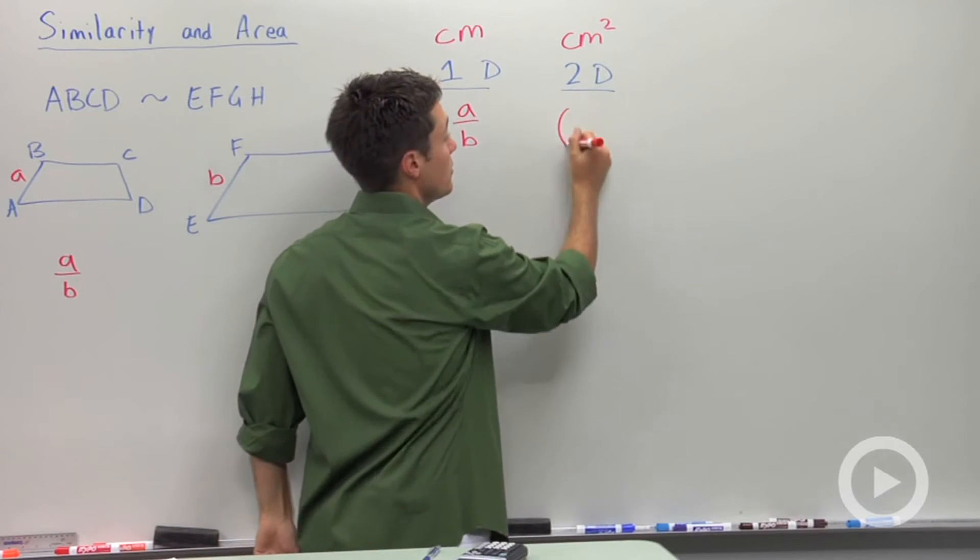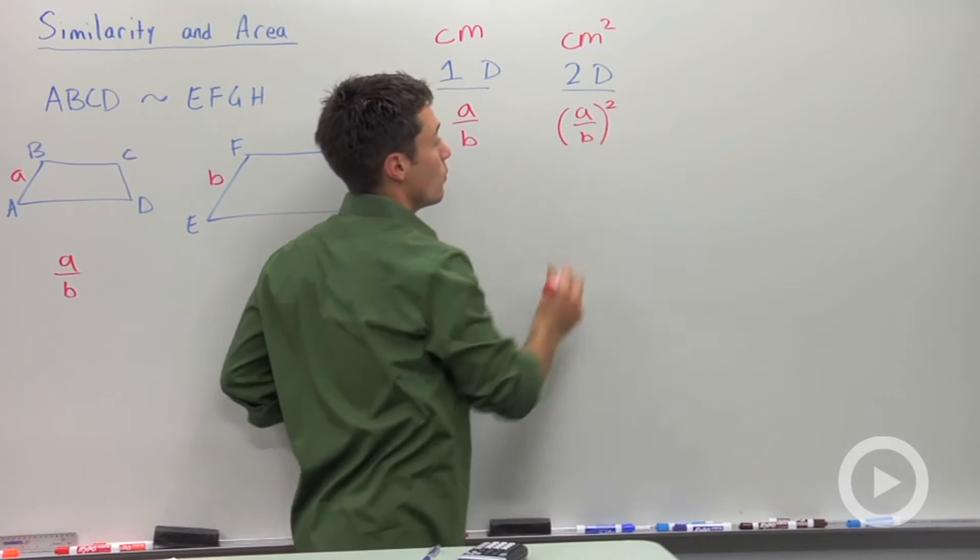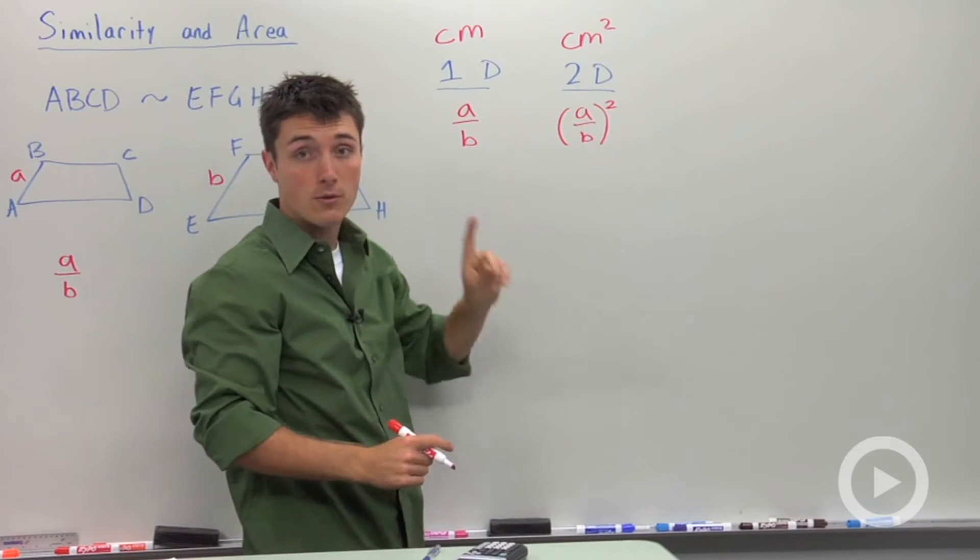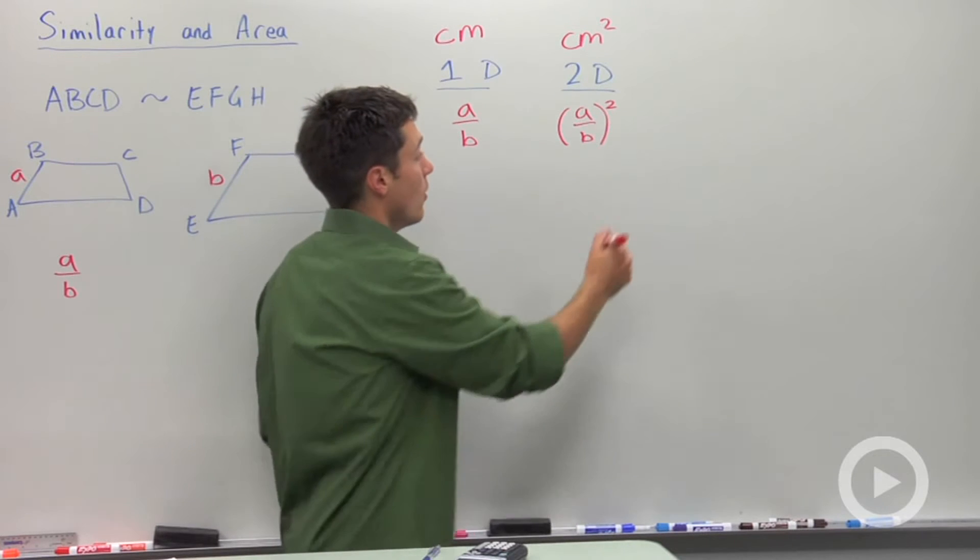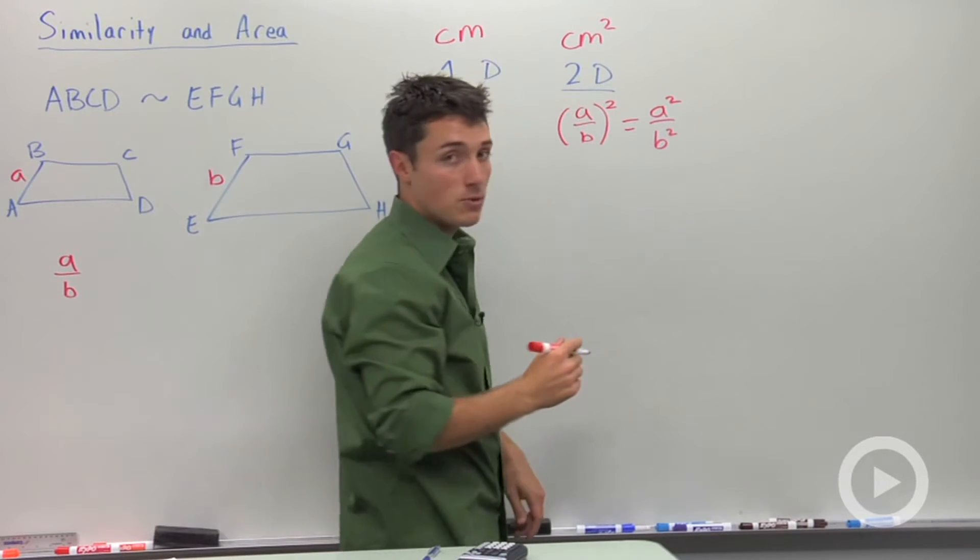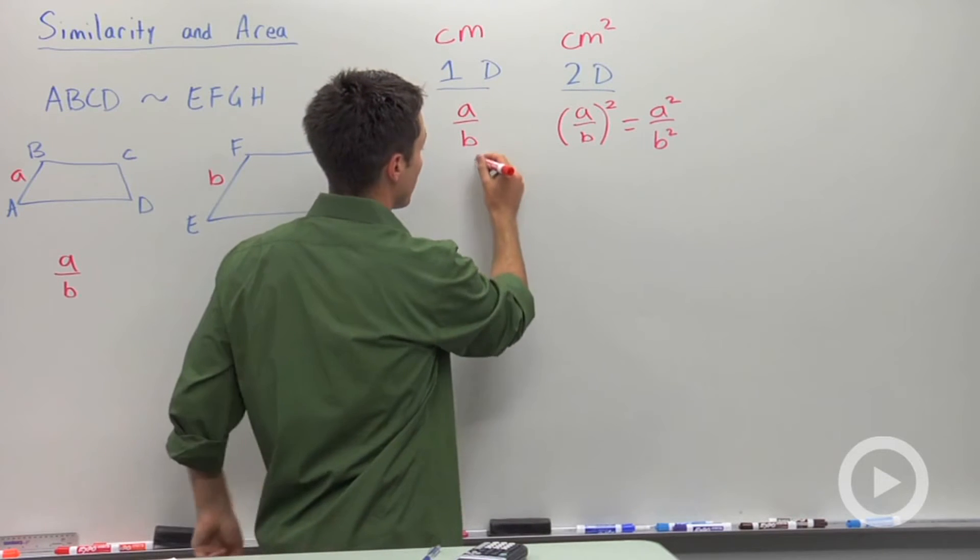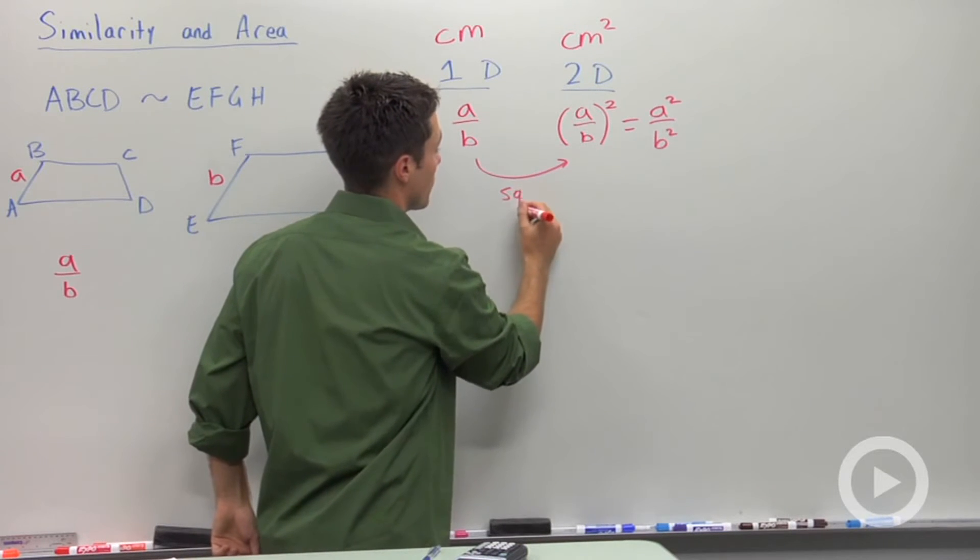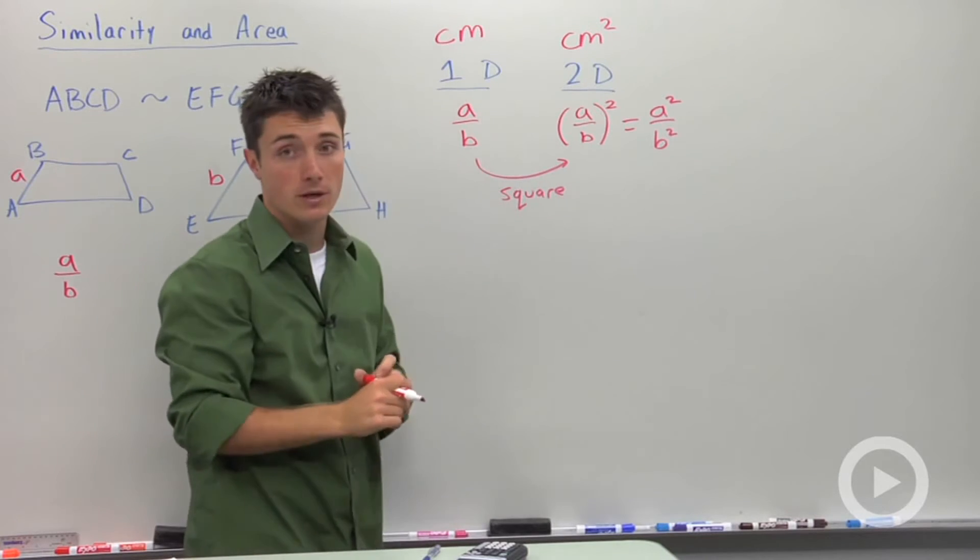So in two dimensions, the ratio of their areas will be that ratio in one dimension squared. Or we could say this is A squared to B squared. So to go from one dimension to two dimensions, you're going to square whatever your ratio is.